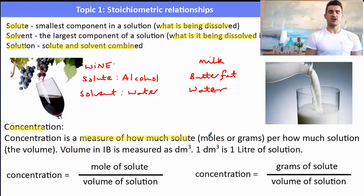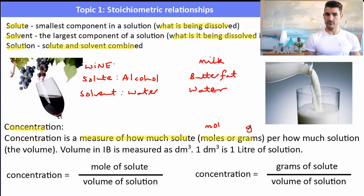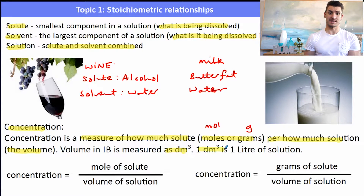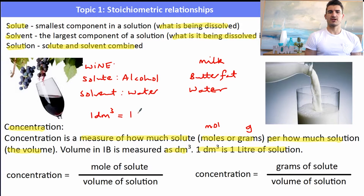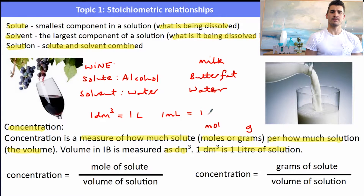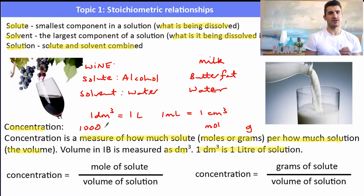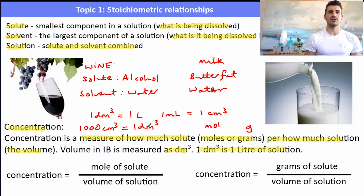Concentration is a measure of how much solute — either in grams or moles — per volume of solution. In IB, volume is measured in decimeters cubed, where one decimeter cubed equals one liter or one thousand milliliters. Also remember: one milliliter equals one centimeter cubed, and there are one thousand centimeters cubed in one decimeter cubed.